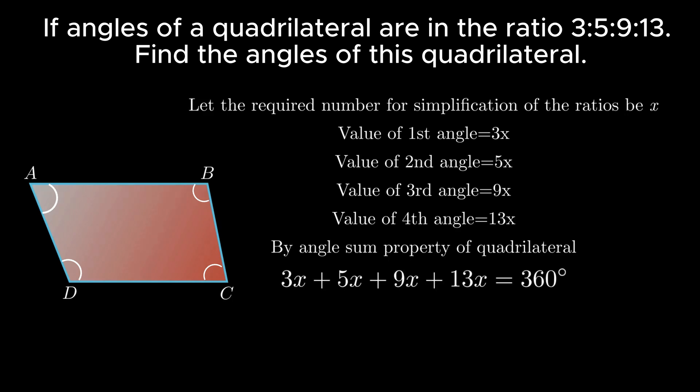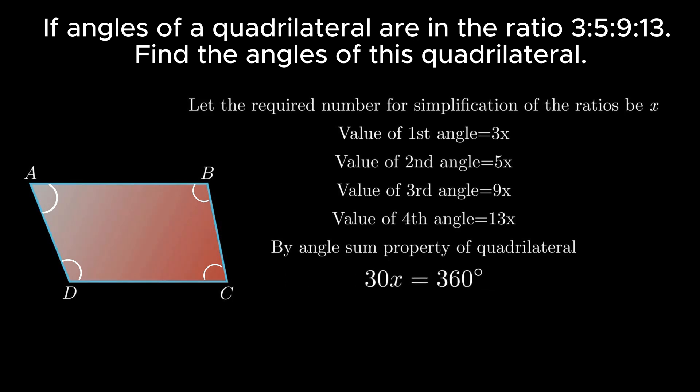On adding 3x, 5x, 9x and 13x we get 30x equals 360 degrees. On transposing, x equals 360 divided by 30, which is equal to 12.